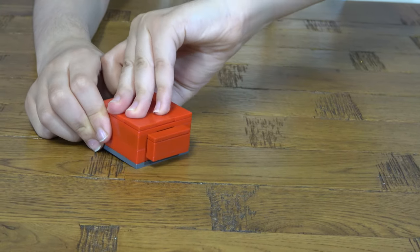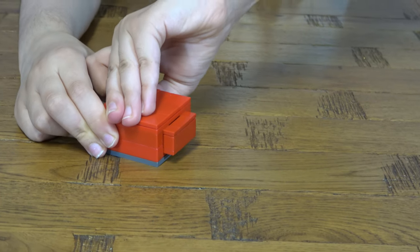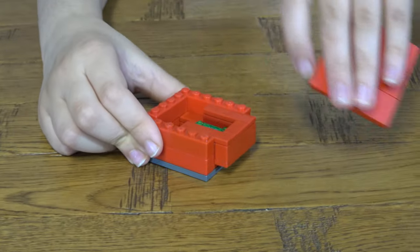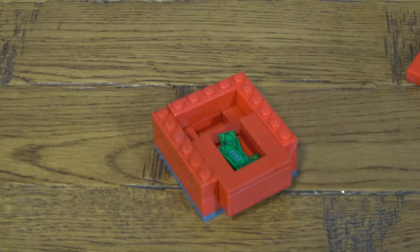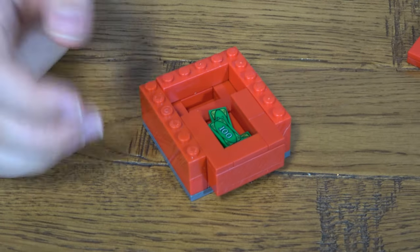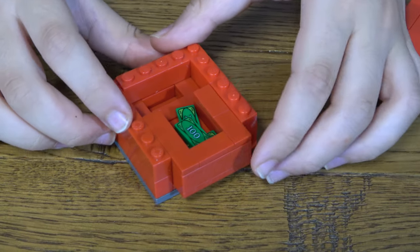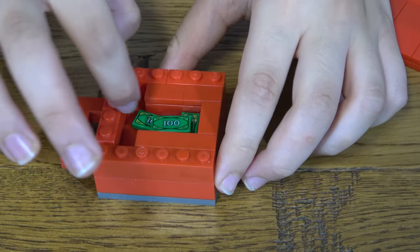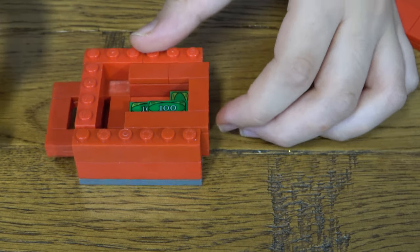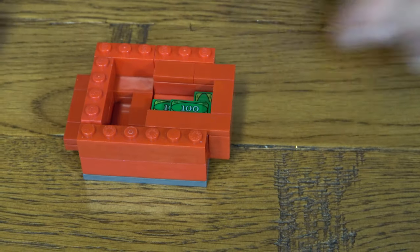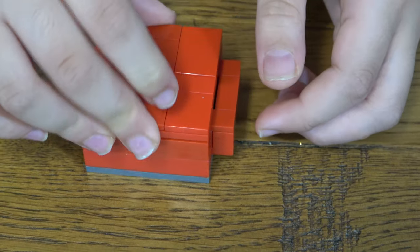I'm just going to show you the mechanism and take off the roof. There you go. As you can see, it's in place right now, and when I push this in, it will push this out. It's a really simple mechanism, not that hard.